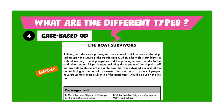Here is an example at the bottom of the list of passengers — I have given only two examples but it is sufficient for you to understand. We have a 70-year-old Olympic gold medalist, and on the other hand, a 35-year-old well-known Hollywood actress who is also pregnant. You will see that it is really a difficult decision to shorten the list of 14 passengers down to five.